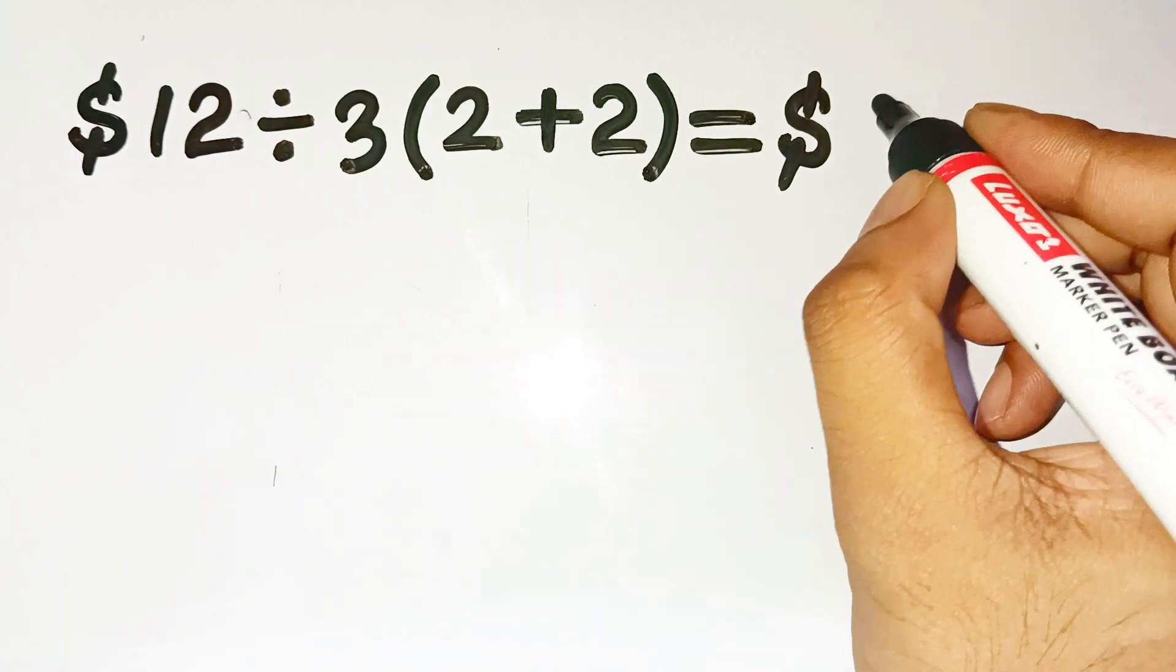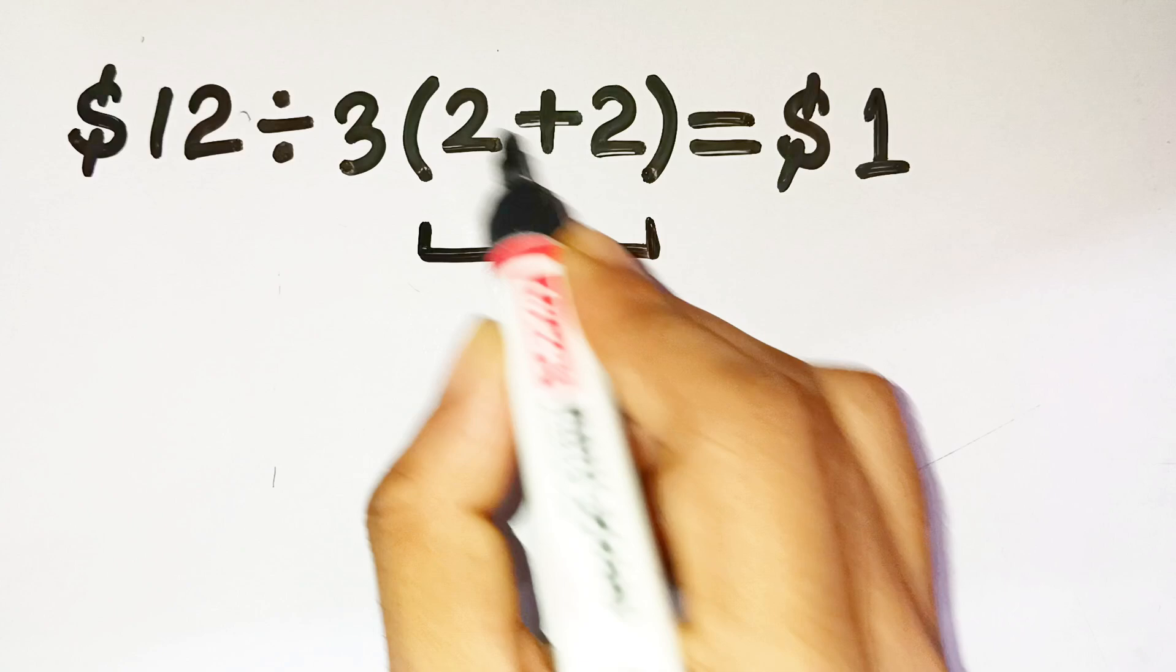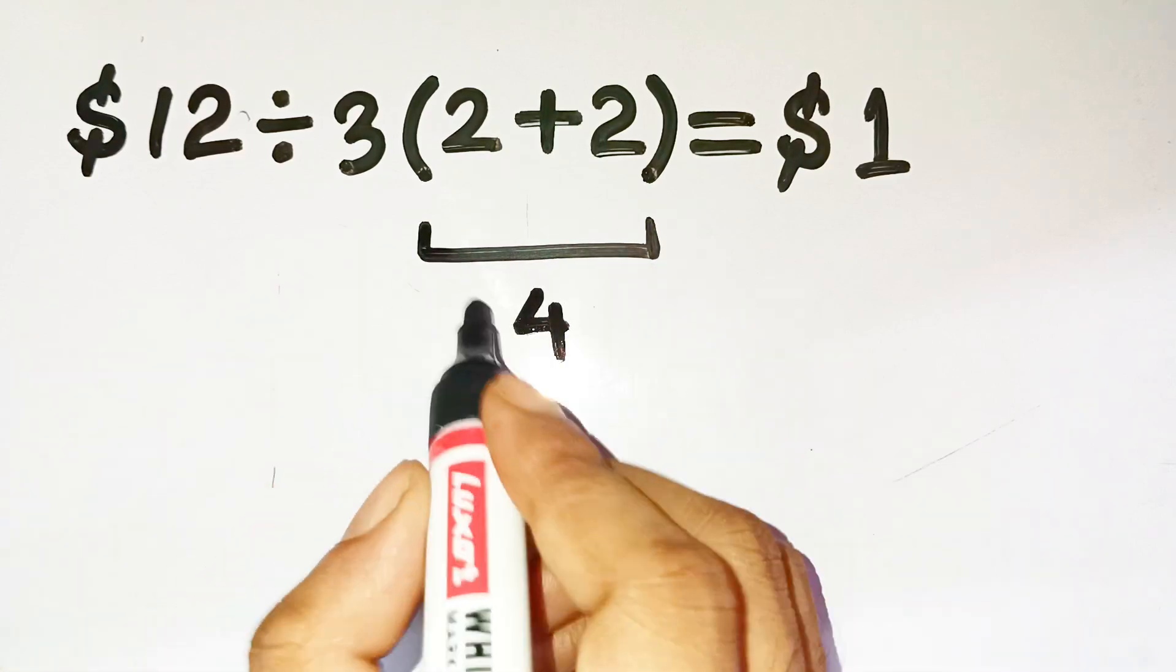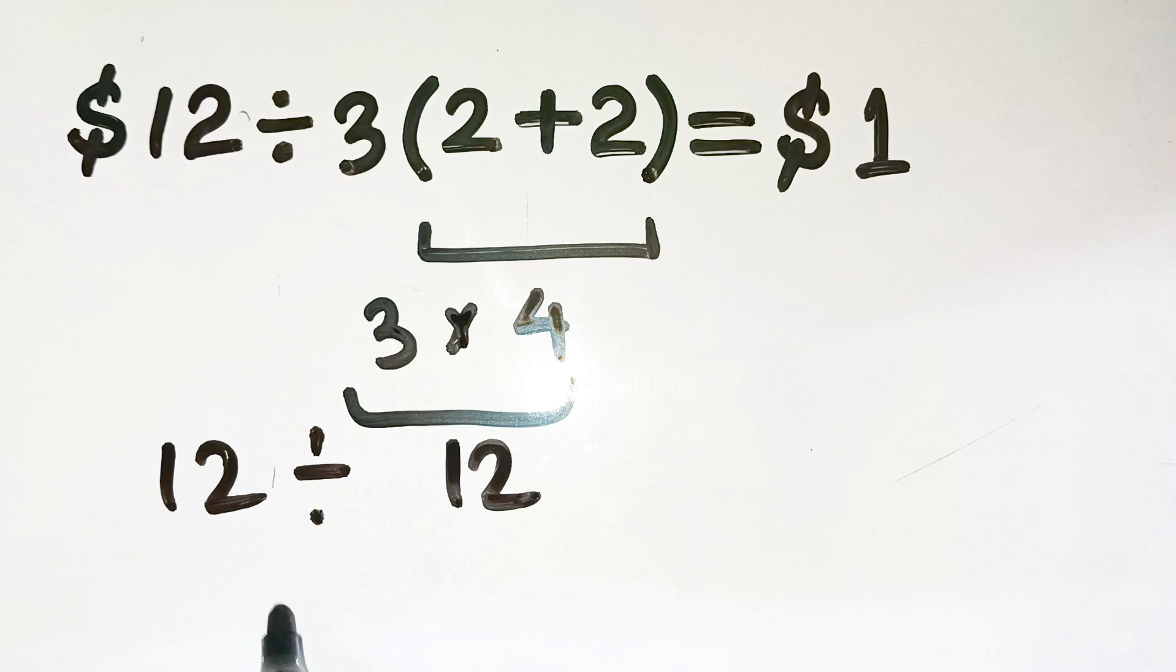You might be thinking the answer is $1, right? Because you probably did this. Inside the parentheses first, 2 plus 2 gives you 4. Then, 3 times 4 equals 12. And finally, 12 divided by 12 gives you 1.